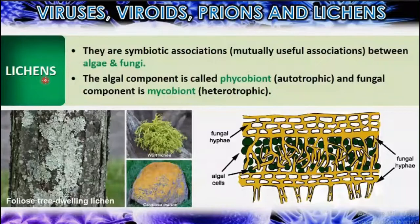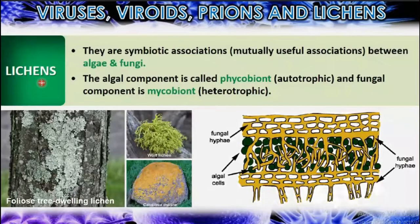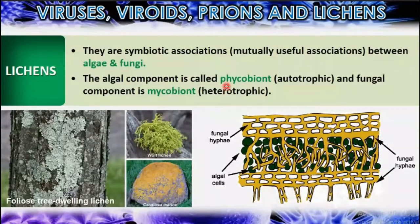The last category is lichens. Lichens are symbiotic associations, which is why they are not grouped separately in the five kingdom classification. They represent a mutually useful association between algae and fungi. Algae belong to Kingdom Plantae and fungi form a separate kingdom. The algal component is called the phycobiont — they are autotrophic. The fungal component is called the mycobiont — they are heterotrophic. Phycology is the study of algae and mycology is the study of fungi.